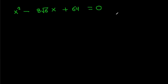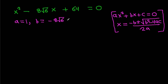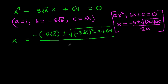For equation x² minus bx minus c equals 0, x equals (−b ± √(b² − 4ac)) / 2a. Here A=1, b = −8√6, and c = 64. So x equals (8√6 ± √((−8√6)² − 4 times 1 times 64)) / (2 times 1), which gives x equals (8√6 ± √(64 times 6 − 64 times 4)) / 2.